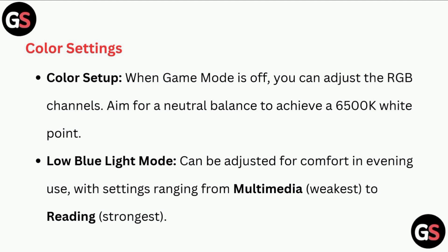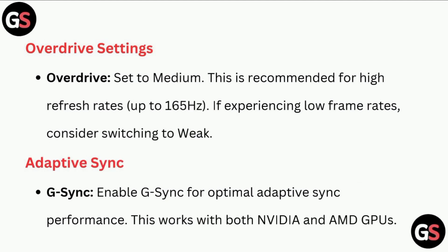Color settings — color setup: when game mode is off, you can adjust the RGB channels for a neutral balance to achieve a 6500K white point. Low blue light mode can be adjusted for comfort during evening use, with settings ranging from multimedia to reading.